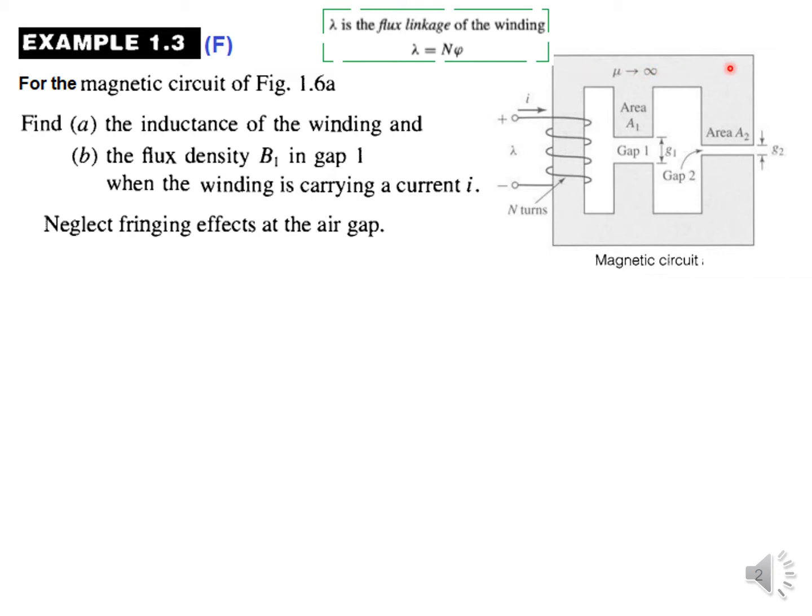We also have the permeability given to be infinity. That means the metal part does not offer any resistance to the flow of magnetic flux. There are two gaps: gap number one whose gap length is g1, and gap number two whose gap length is g2.